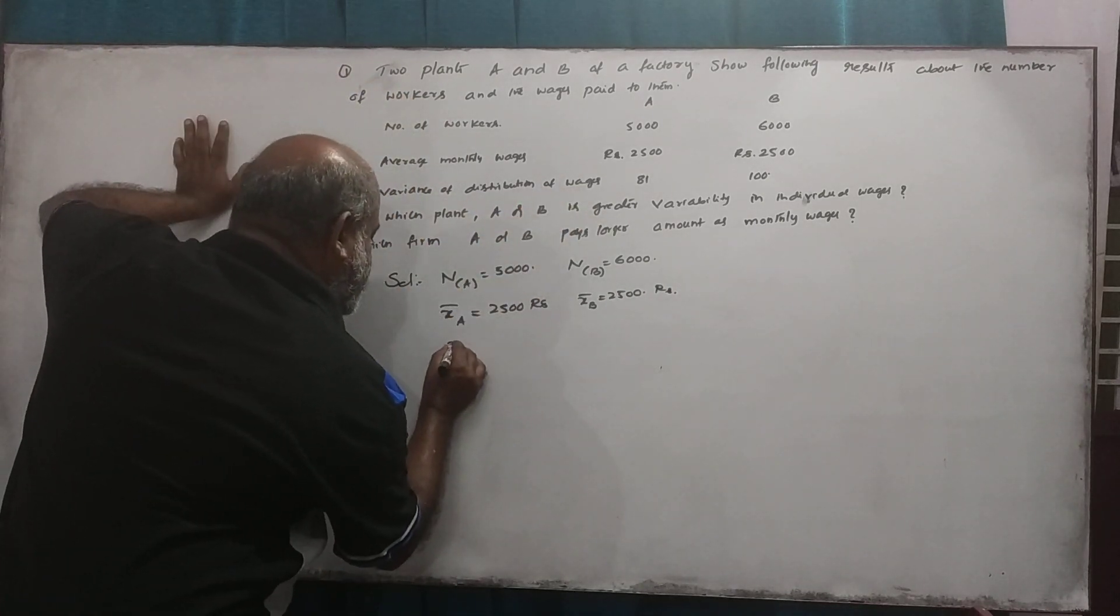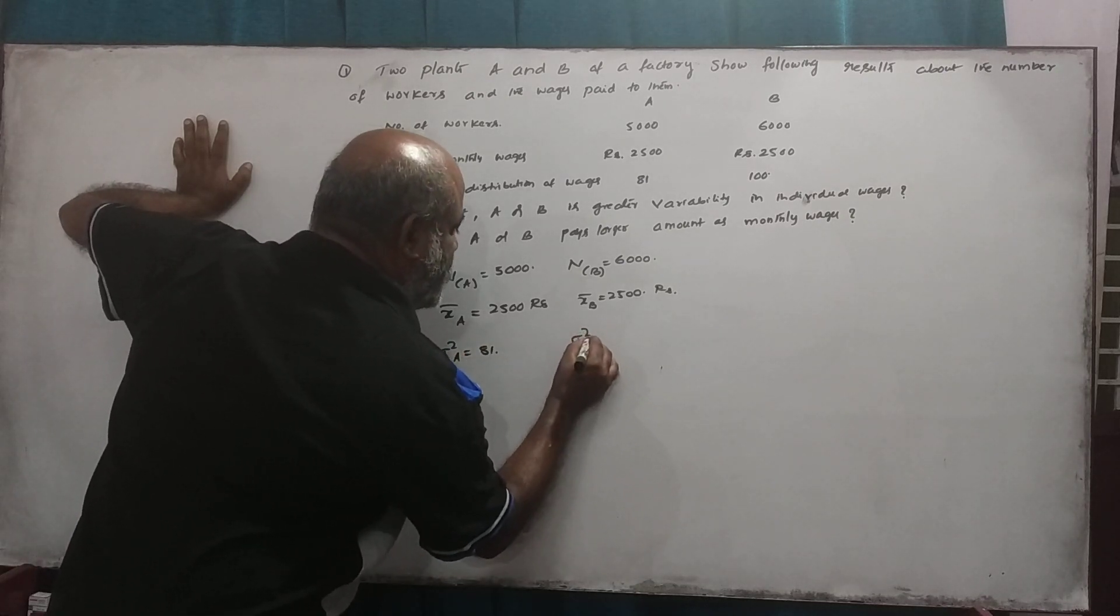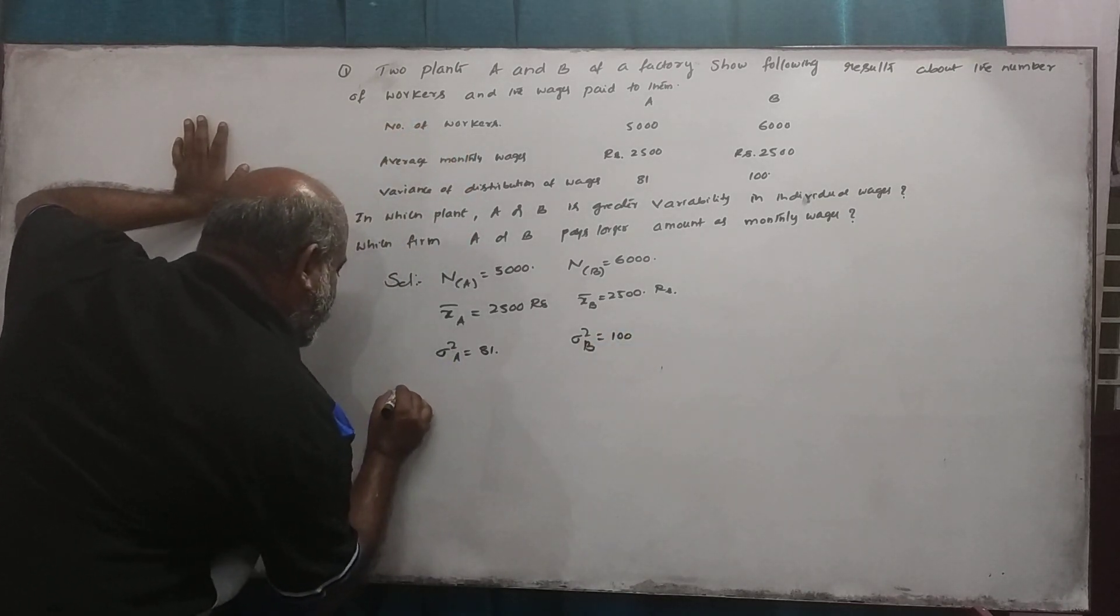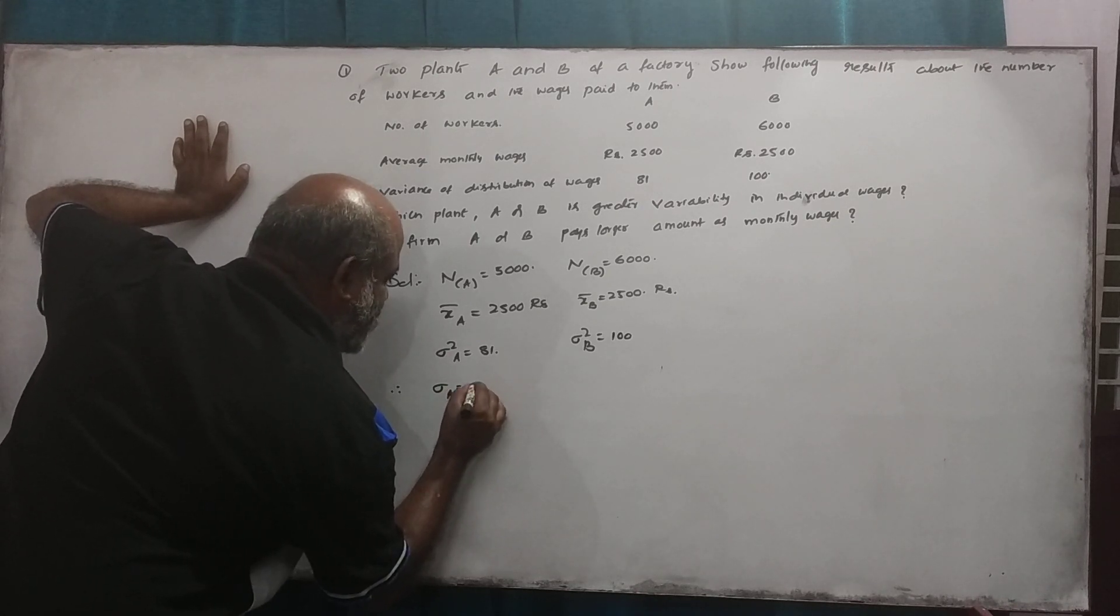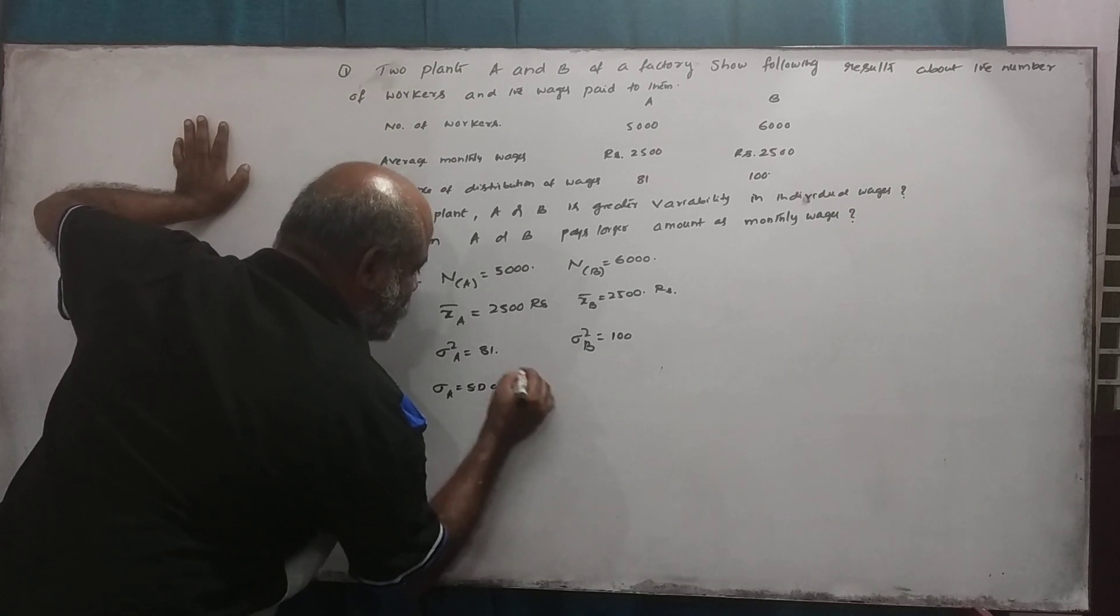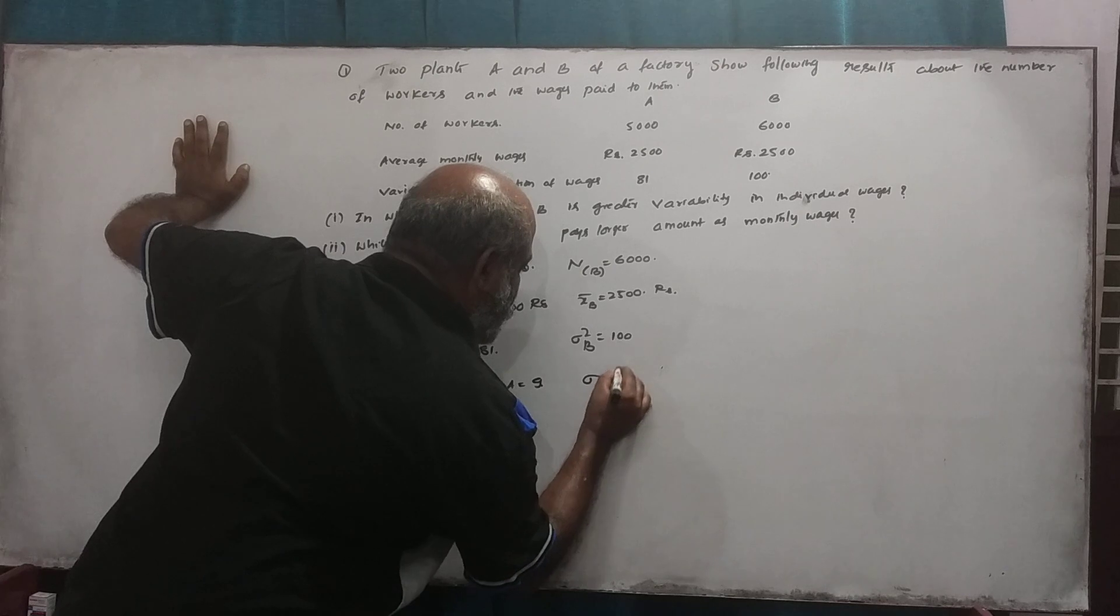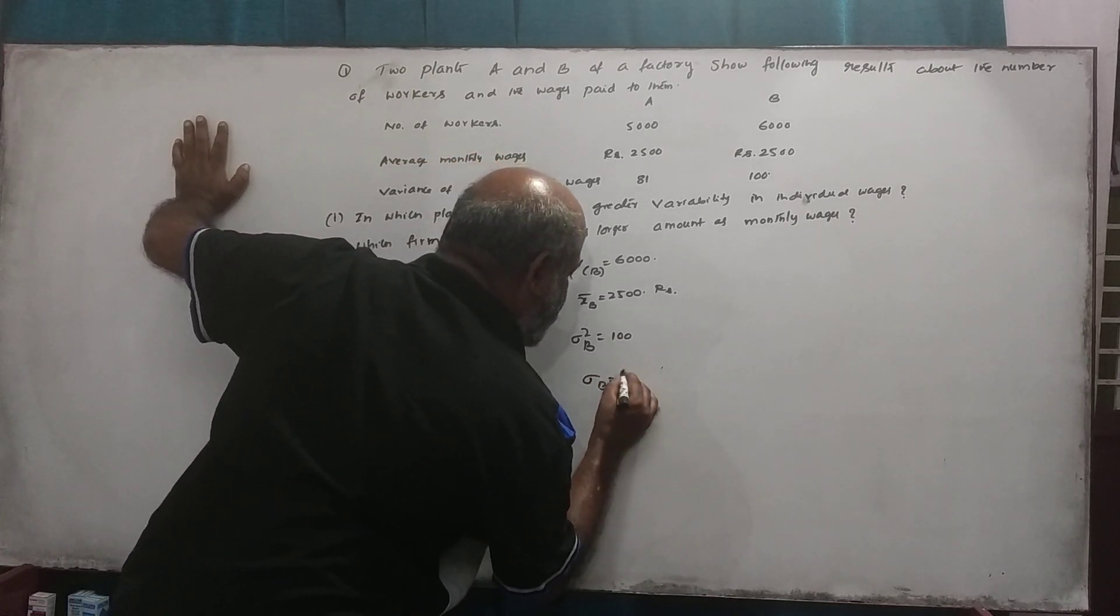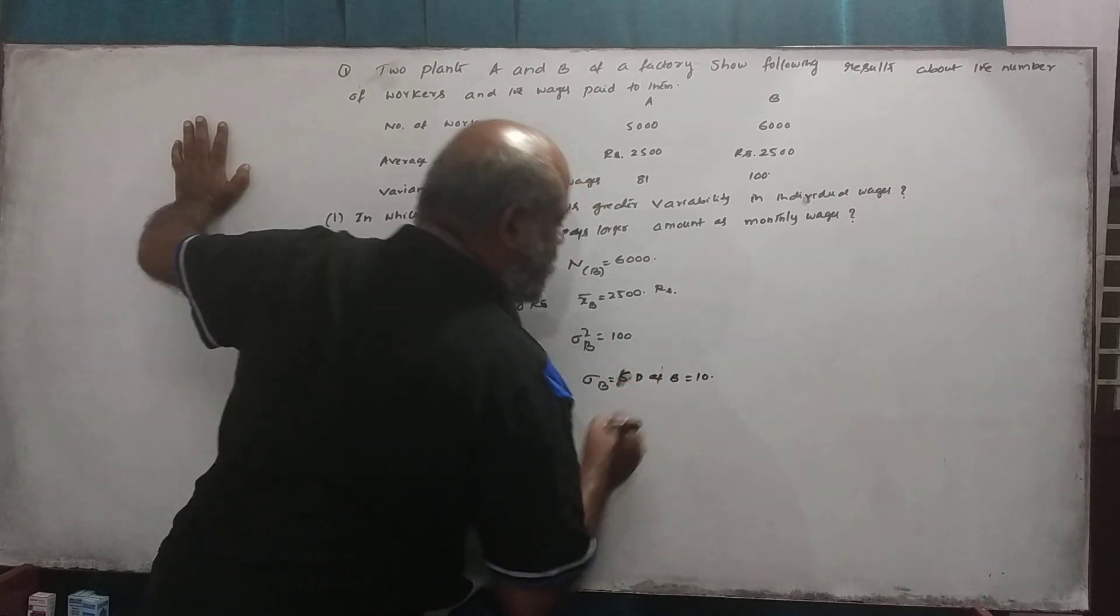The variance is equal to sigma square A, 81. Sigma square B, 80 is equal to 100. Therefore, sigma A is equal to standard deviation, equal to 9. Sigma B, root of 100, this is standard deviation of B, 10.